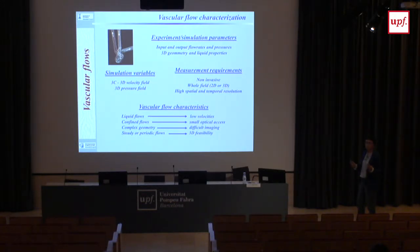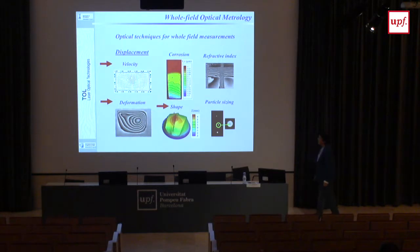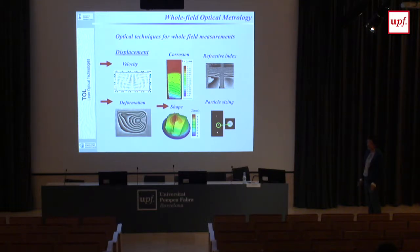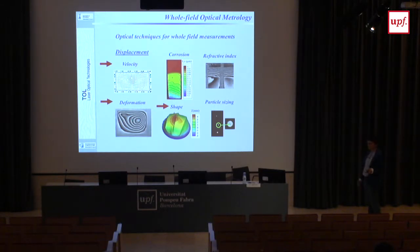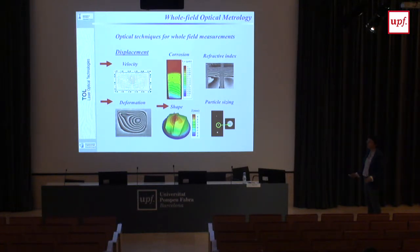Now for optical techniques for whole-field measurements — in our group we have been using these techniques for 35 years. I started with velocity measurements in a flow plane during my PhD. With this technique we have measured displacement, either on a fluid or on a solid such as the vessel wall. Displacement on the fluid means velocity. In one plane we get the in-plane velocities; with a different technique we get only the out-of-plane component; combining the two gives us all three components of velocity.